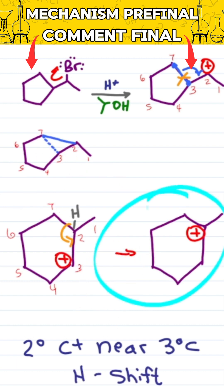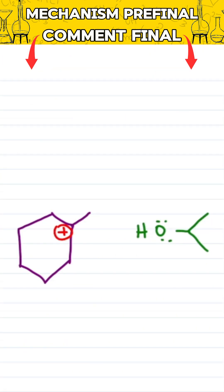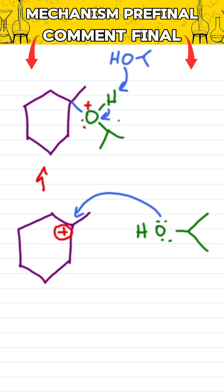Now that we have a stable carbocation, alcohol can finally attack with two options. I can do a direct attack for an SN1 reaction. Use another alcohol to deprotonate and you get an ether.